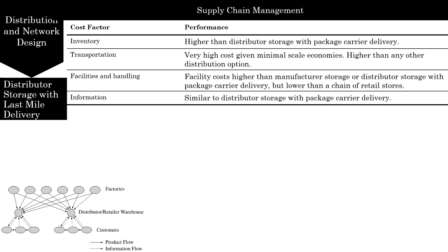Delivery costs including transportation and processing can be more than $20 per home delivery in the grocery industry. Last mile delivery may be somewhat less expensive in large, dense cities. Transportation costs may also be justifiable for bulky products for which the customer is willing to pay for home delivery. Home delivery of water and large bags of rice has proved quite successful in China, where high population density has helped decrease delivery costs. Transportation costs of last mile delivery are best justified where the customer is purchasing large quantities — businesses such as auto dealerships purchase large quantities of spare parts on a daily basis.